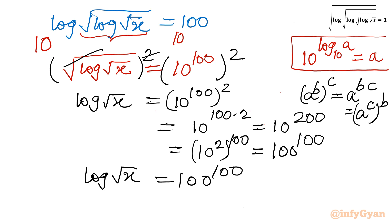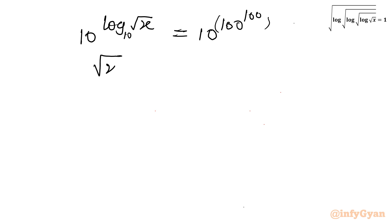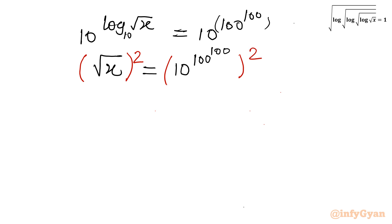Let's put base 10 on both sides once again. So I will write 10 raised to the power log root x, equals 10 raised to the power 100^100. Now left hand side, using the property that base is 10, I can write root x. Right hand side it would be 10 power 100 power 100. Now I will take squaring one very last time to get our x value. Square root and square will cancel, x will come out equals 10 raised to the power 100^100, whole power 2.